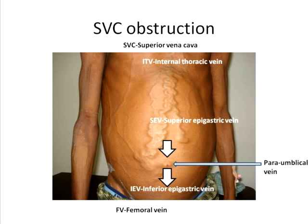In superior vena cava obstruction, the opposite happens. Since blood cannot go through the superior vena cava, it takes the route through the internal thoracic vein, the superior epigastric vein, the inferior epigastric vein, and through the femoral vein. Therefore, the blood flow will be downwards both above and below the umbilicus.